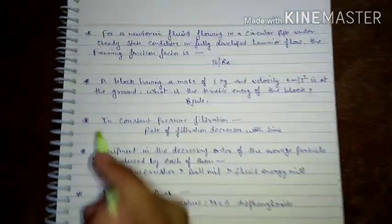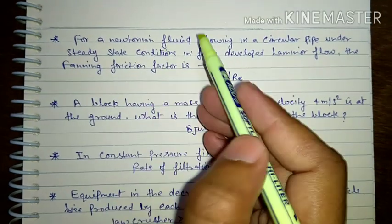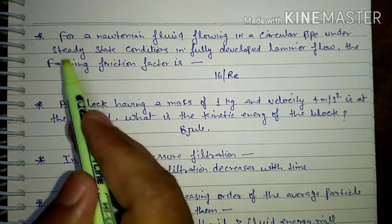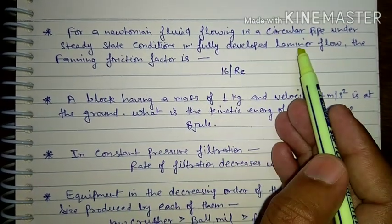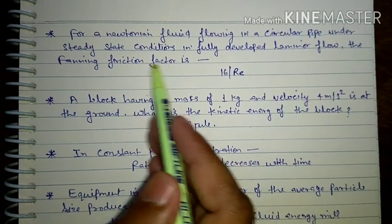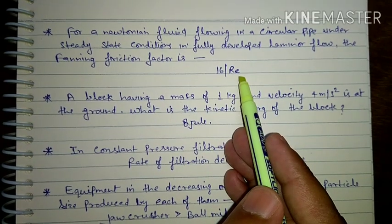Next question: For a Newtonian fluid flowing in a circular pipe under steady state condition in fully developed laminar flow, the fanning friction factor is 16 upon Reynolds number.